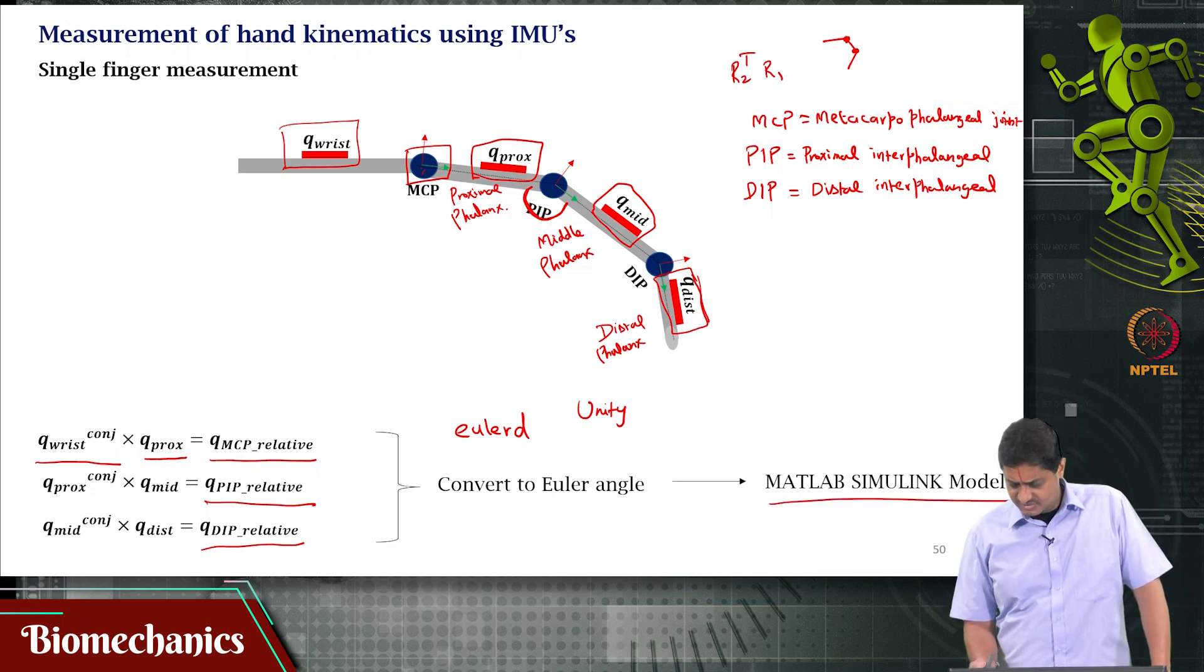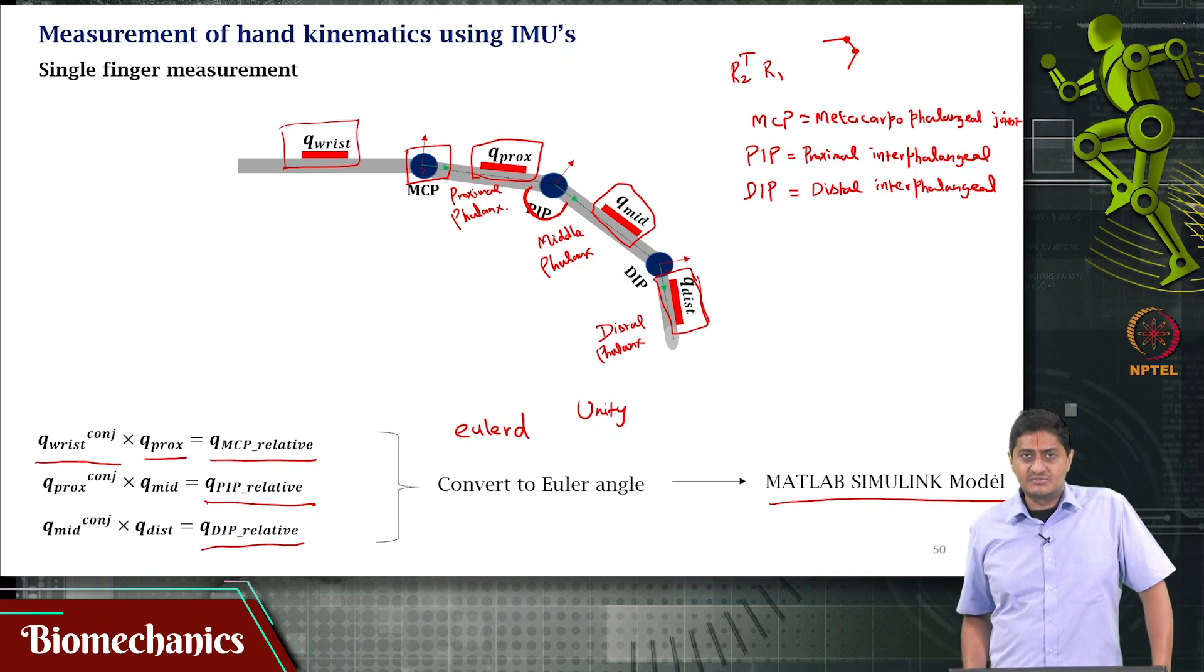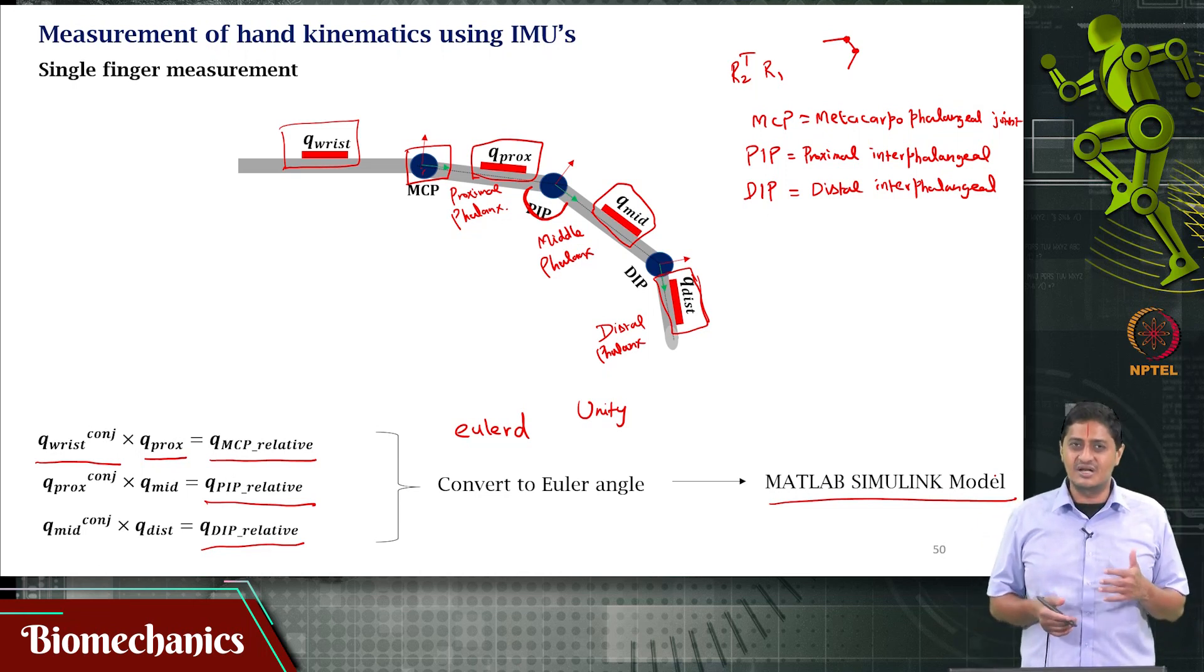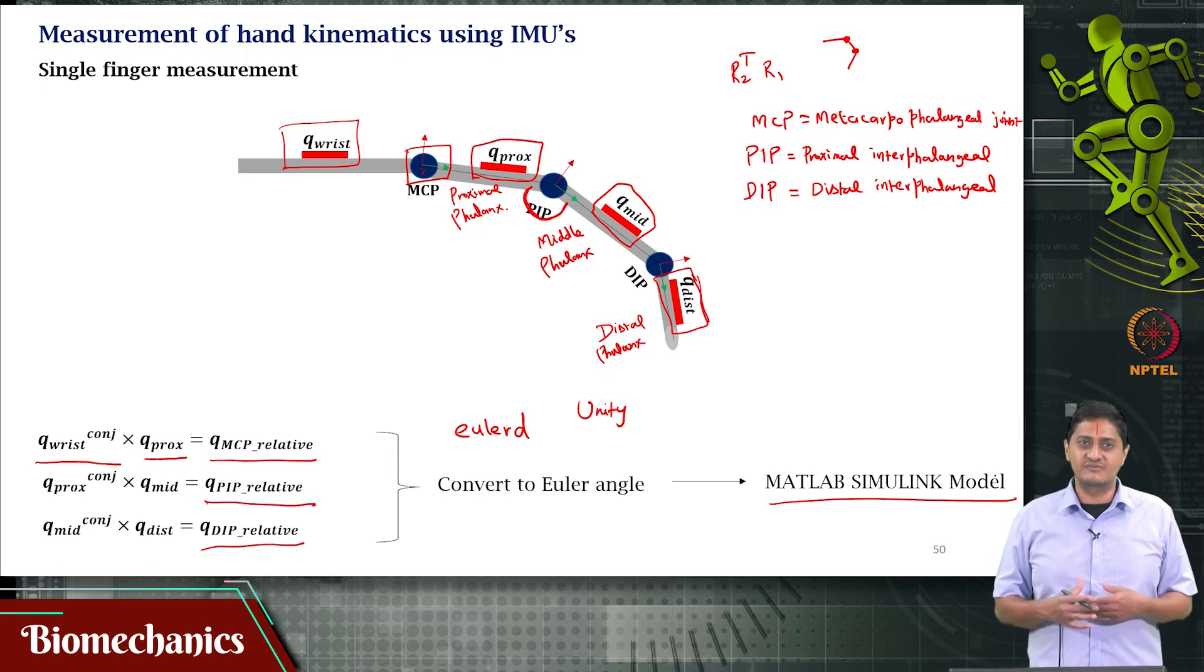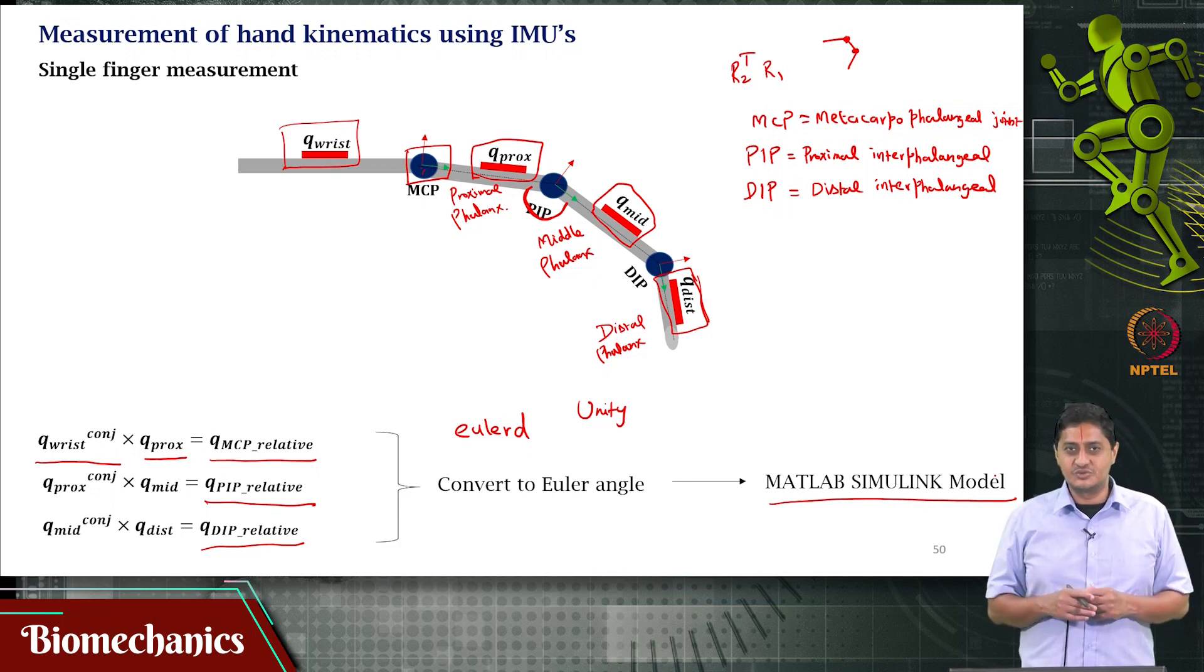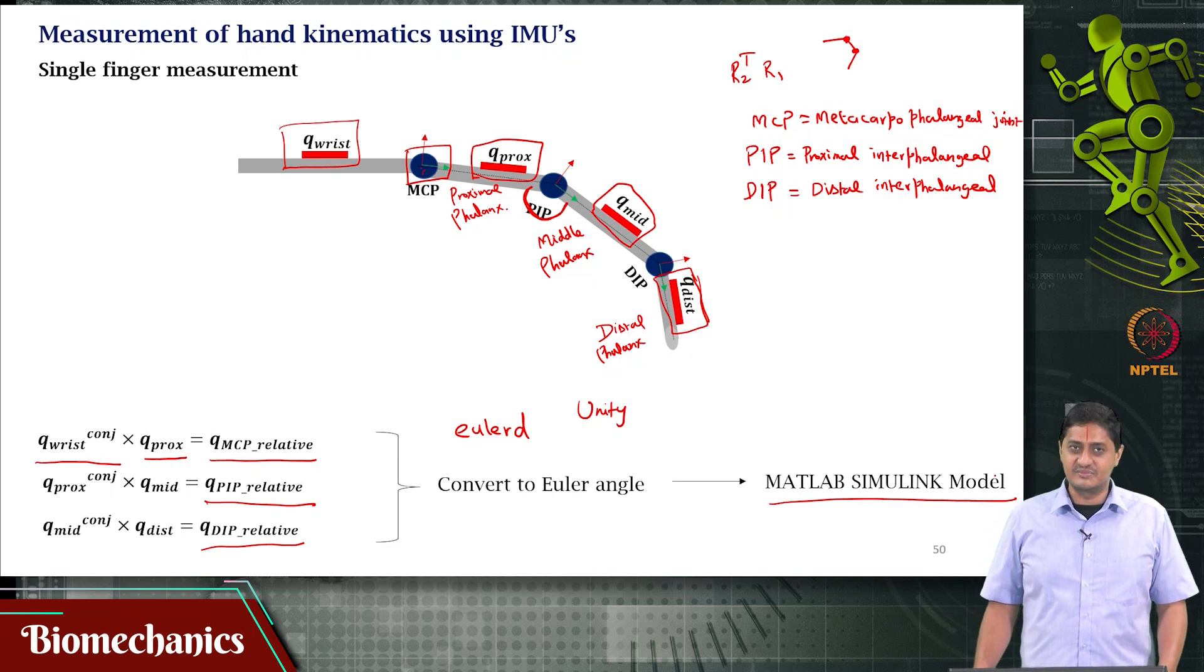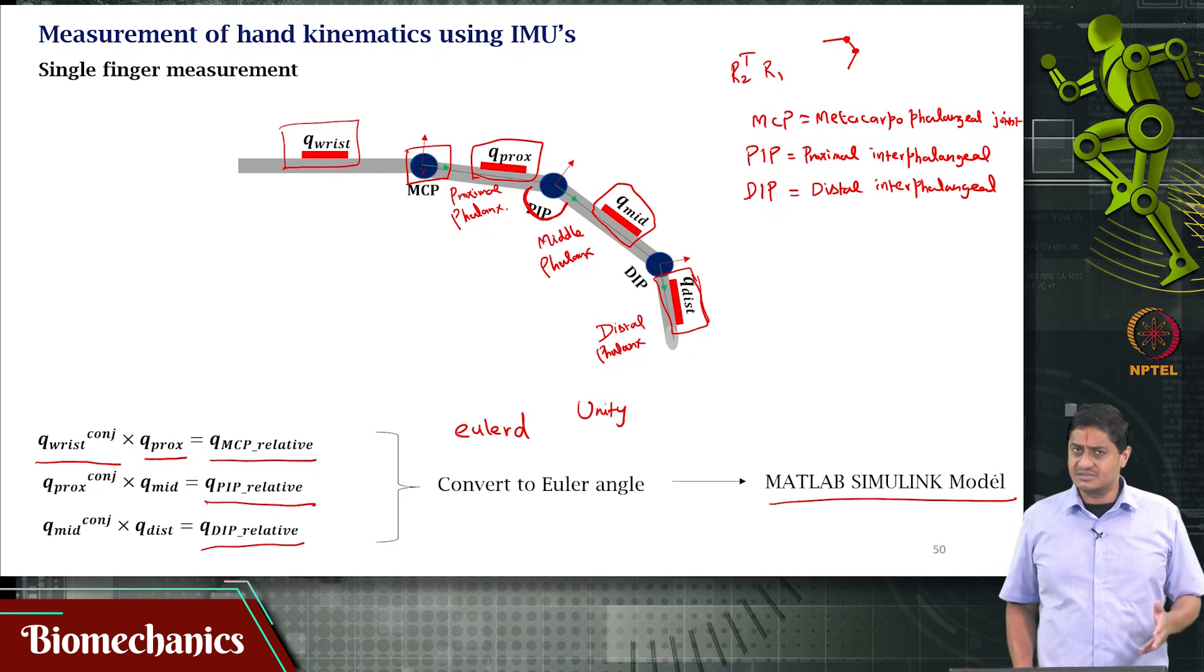You can use MATLAB Simulink model. If you use EulerD and convert to Euler angles, you can develop a solid model using MATLAB Simulink that will help you animate this. Unity will straight away take quaternions and help you animate. These are different tools - they have their own advantages and disadvantages. It's not like one is better than the other. It's all about how conversant you are with that particular tool. It's useful to learn more than one of these tools so you understand how these things work and maybe find jobs that have application. For example, Unity has extraordinary potential for jobs.